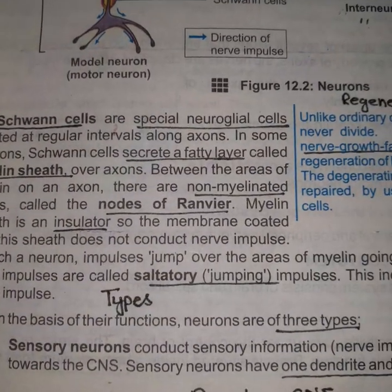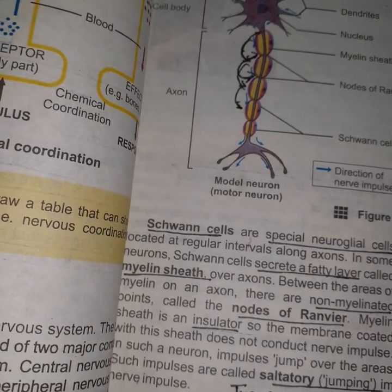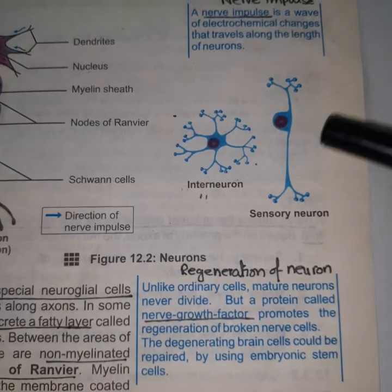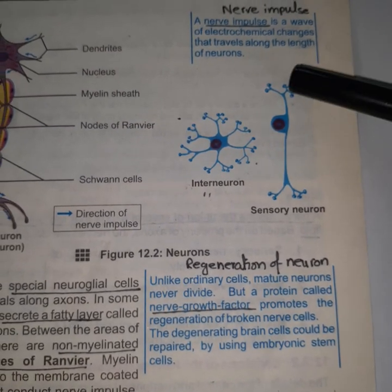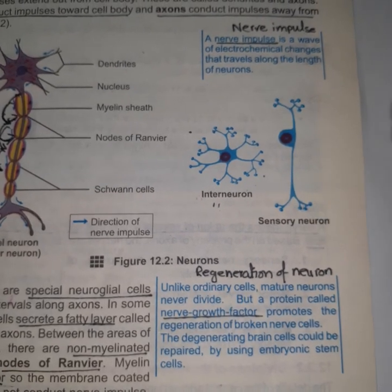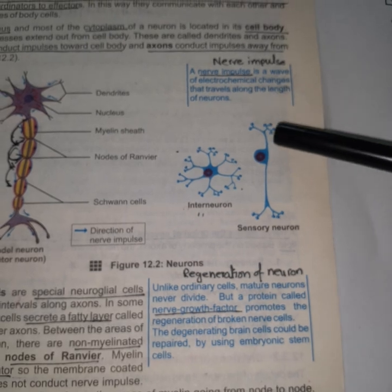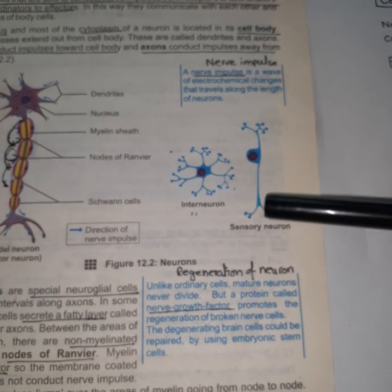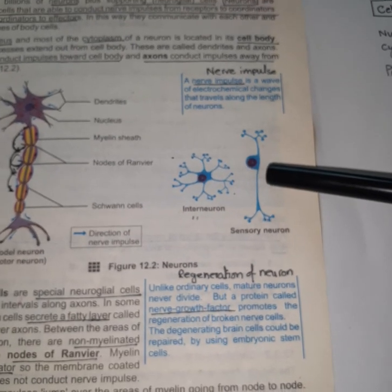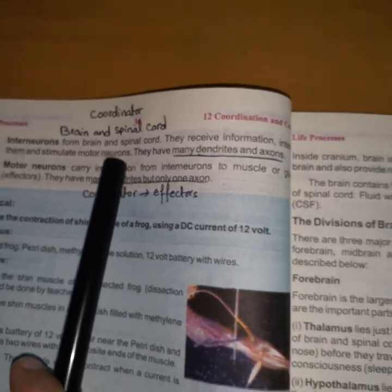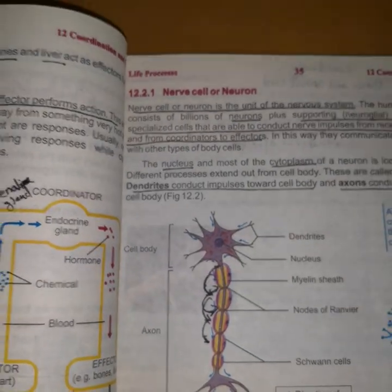The next thing we are going to discuss is the types of neuron. The first type is the sensory neuron. The sensory neuron receives the message and then transmits it to the CNS. All stimuli are received by the sensory neuron, which then moves this message toward the coordinator or the CNS — the central nervous system or the peripheral nervous system. One dendrite and one axon are present in it.